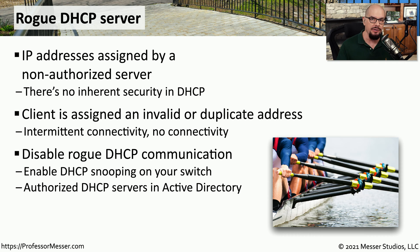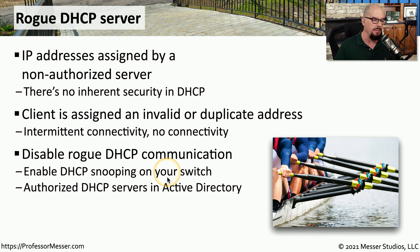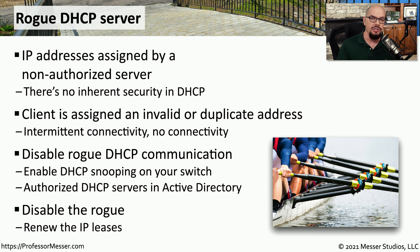The way to avoid a rogue DHCP server is to constantly monitor for unauthorized DHCP communication and block that traffic at the switch. This is called DHCP snooping on most switches, and it automatically will find these rogue servers and prevent them from communicating. If you're on a Microsoft network, you can also authorize DHCP servers in Active Directory so that your AD configuration knows exactly what the legitimate DHCP servers are. If you do find a rogue DHCP server that's been handing out IP addresses, you'll need to disable the interface that DHCP server is on and have all of your devices release and renew their IP leases.